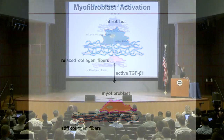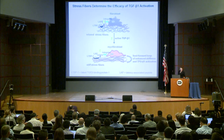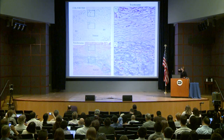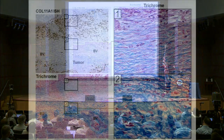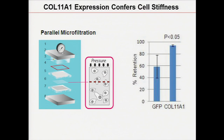Fibroblasts produce relaxed, wavy collagen fibers, but myofibroblasts tend to produce straight, stiff collagen fibers, which is important for activation and creates a feed-forward loop of increasing stiffness. You can see this in real tumors: where collagen 11A1 is expressed in brown, the trichrome staining shows nice straight fibers, whereas where collagen 11A1 is not expressed you see nice blue wavy fibers. We also showed that if we overexpress collagen 11A1, we make the cell stiffer.